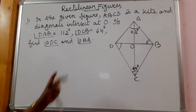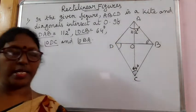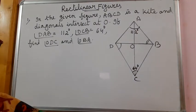So before doing this, let us know the properties of a kite. In a kite, the diagonals intersect each other at right angles.